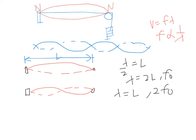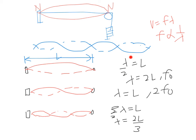For the third resonance, you get three loops. The length satisfies 3/2 lambda equals L, so lambda equals 2L/3. Comparing to the fundamental frequency where lambda was 2L, the wavelength is divided by 3, so the frequency must multiply by 3, giving 3F0. So if the first resonance is at 15 Hz, the second is 30 Hz, and the third is 45 Hz. You can see a trend: lambda equals 2L/1, then 2L/2, then 2L/3.